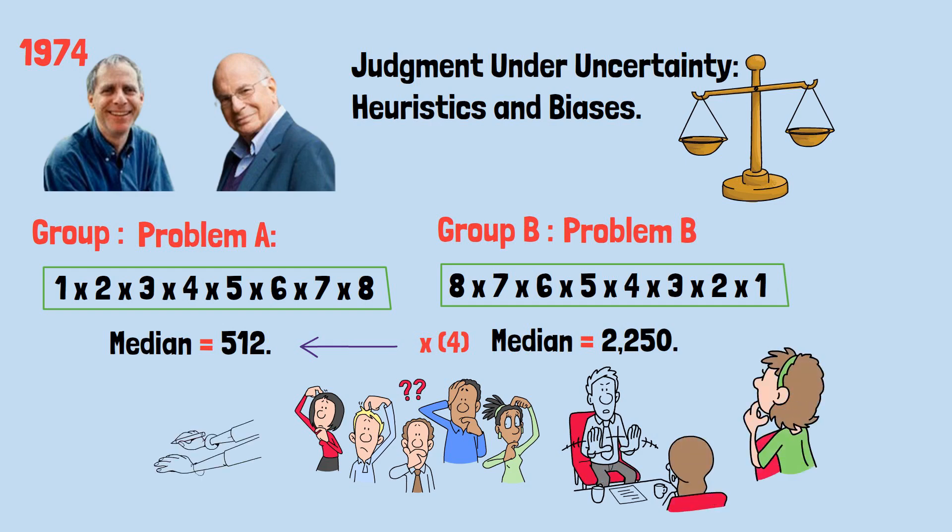Oh, also, the actual answer to this problem is, as you may have guessed, 40,320. So both groups were way off each other and way, way off the truth.